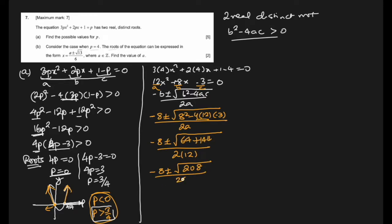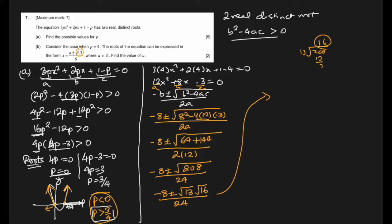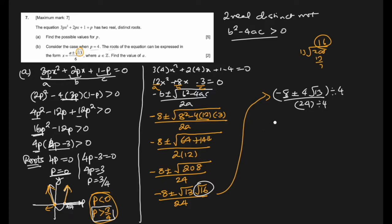Breaking 208 to find 13 as a factor: 13 × 16 = 208, so √208 = 4√13. This gives (-8 ± 4√13) / 24. Dividing numerator and denominator by 4: (-2 ± √13) / 6. So the expression matches the given form, and a = -2, which is indeed an integer.